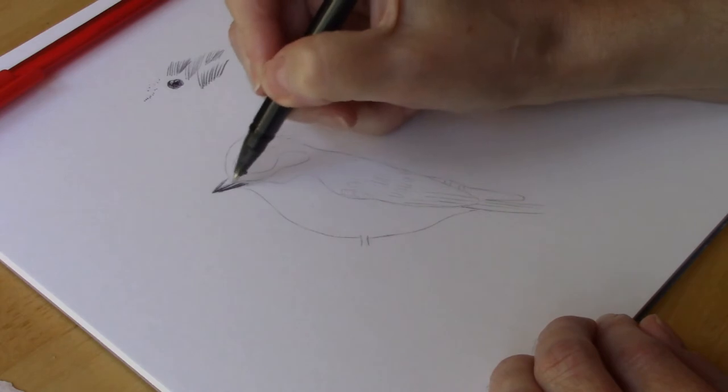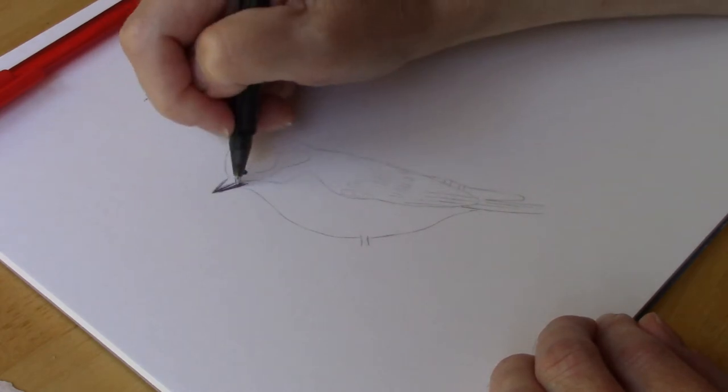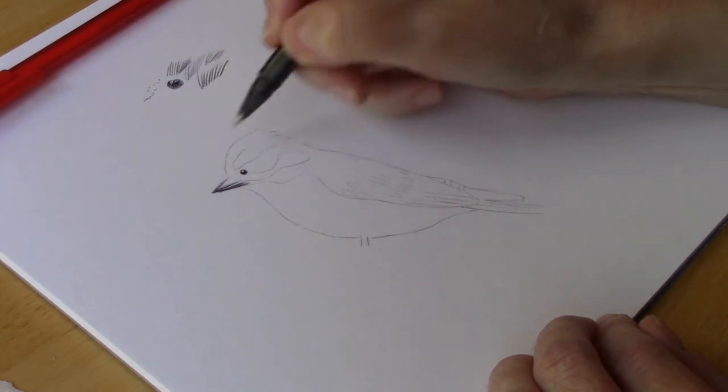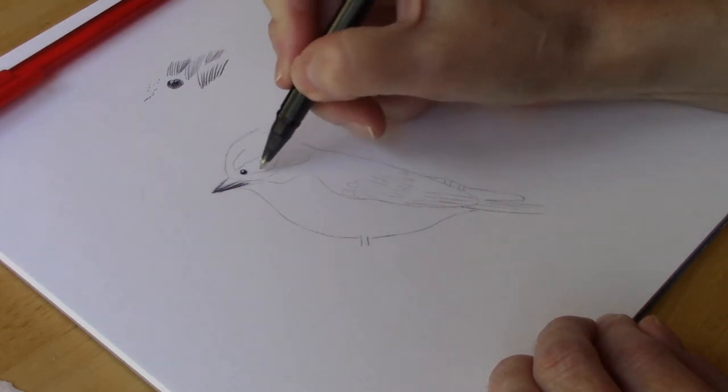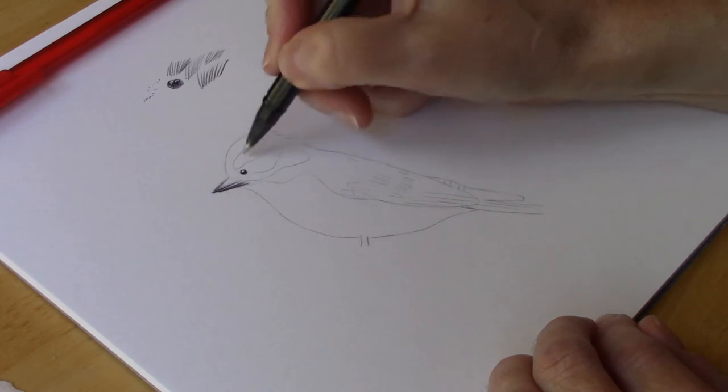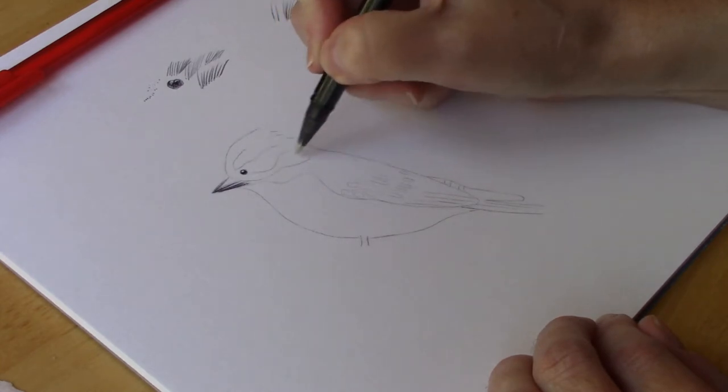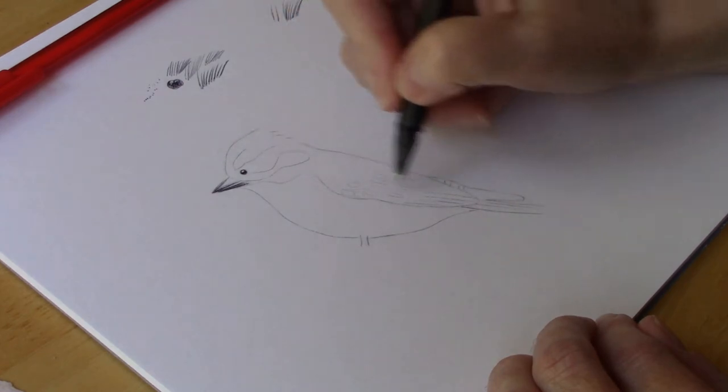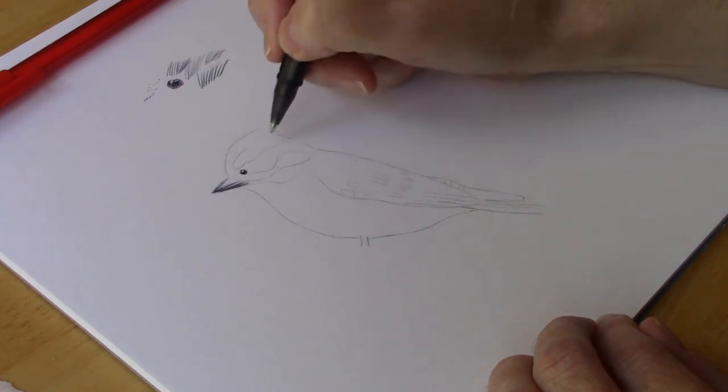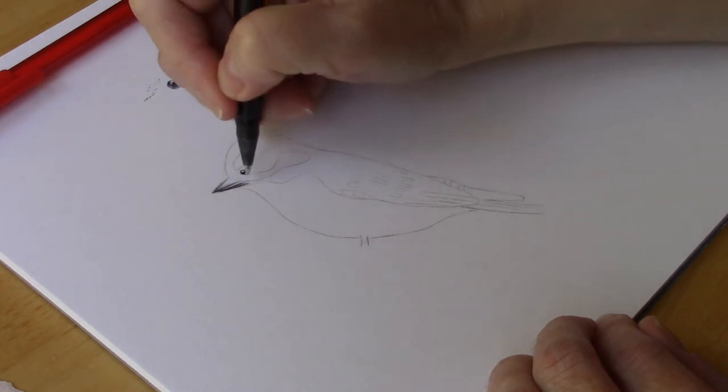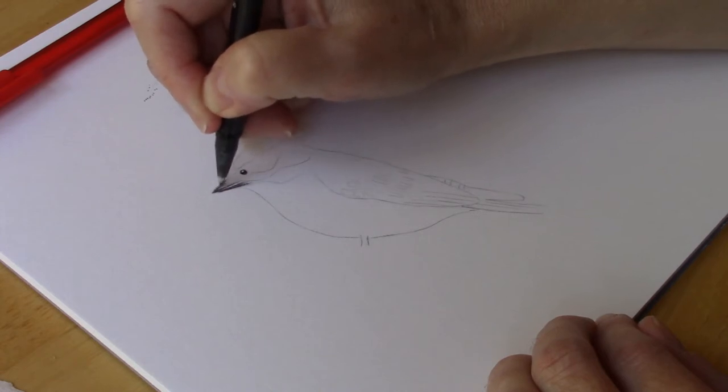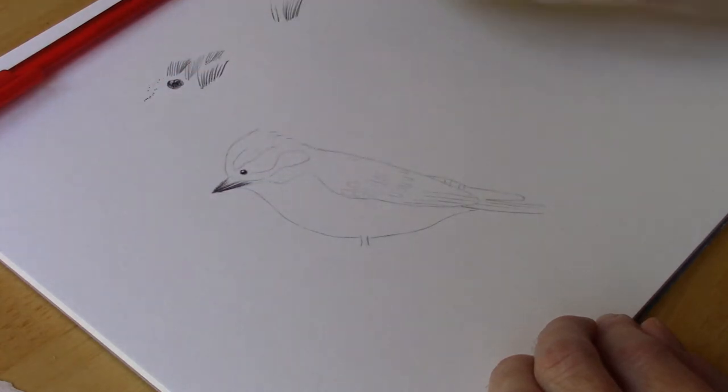If you notice, I left a little white space. The thing with ink is you have to plan. So our downy woodpecker has a white area here and a white area here and then his chest is white and then he has some white patches on his wings. So we have to make sure we plan where we're going with our pen. You cannot erase with ballpoint, so just be careful.